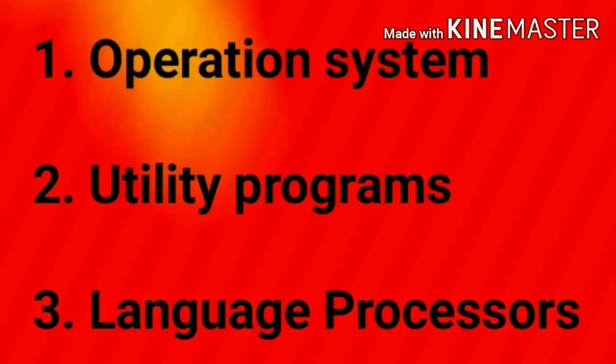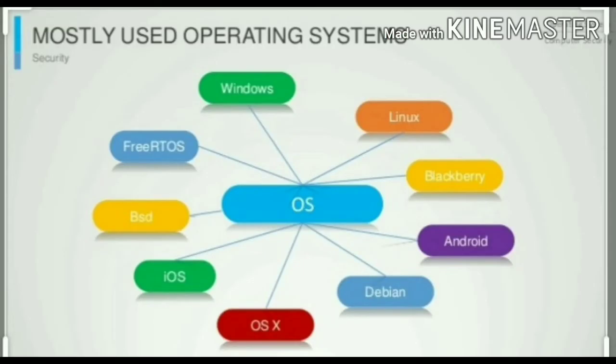System software is of three types: Operating System, Utility Programs, and Language Processor. An Operating System is software that controls the overall activity of a computer system. It provides the interface between the user and the computer hardware.